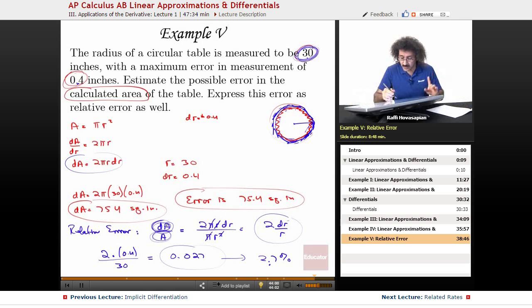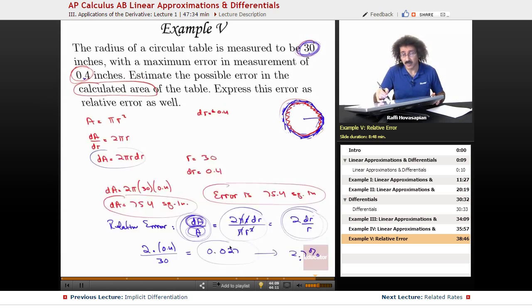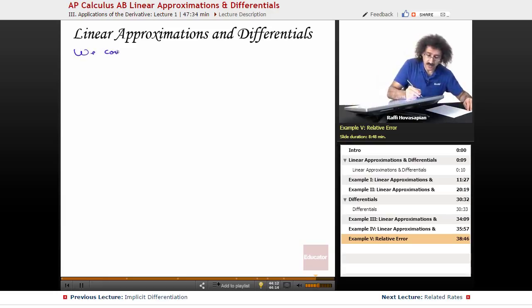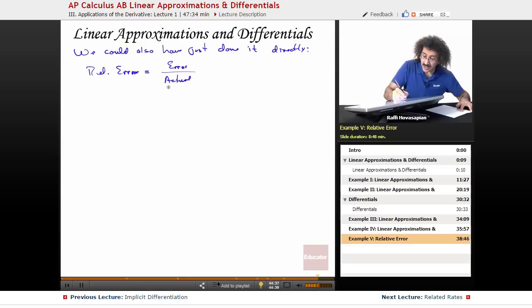So relative error is the error itself that you calculate divided by the actual area of the value that you measured. We could have done this directly. So here, we actually did relative error. We used dA over A. The error over the actual value, we did it in terms of variables, and then we plugged the variables in. I could just have done it directly. So we could also have just done it directly. In other words, the definition of relative error is equal to the actual error over the actual value. The error over the actual value.